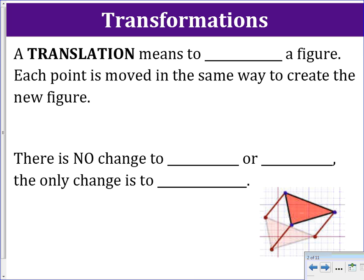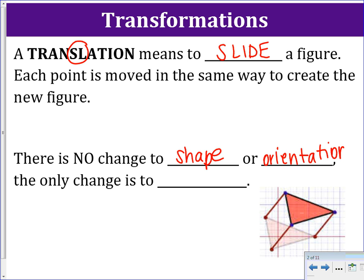A translation is one type of transformation, which is how we can change a figure. A translation means to take a figure and slide it. You can remember 'slide' by the SL in translation. In a translation, each point is moved in the same exact way to create a new figure. There is no change to shape, orientation, or size — the only thing that changes is the location.